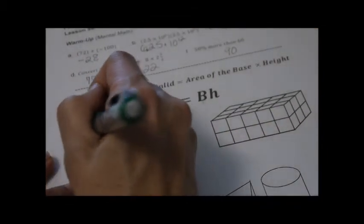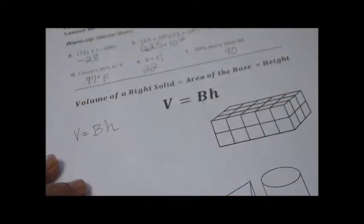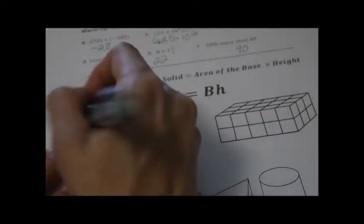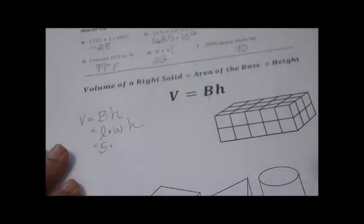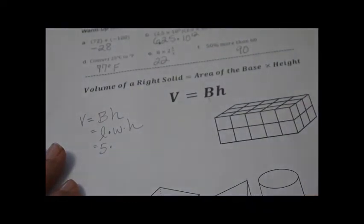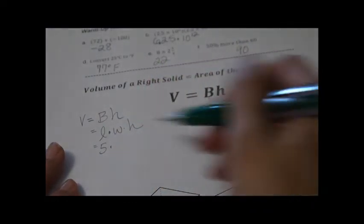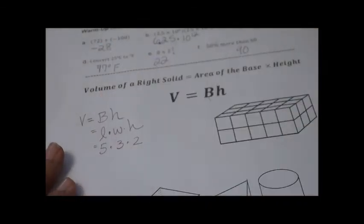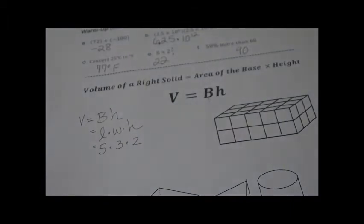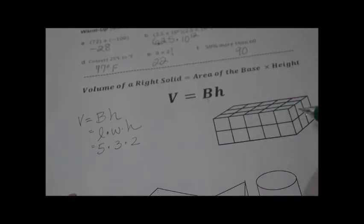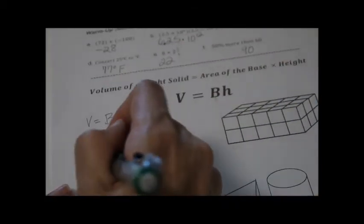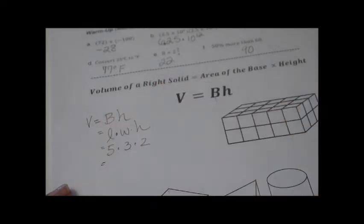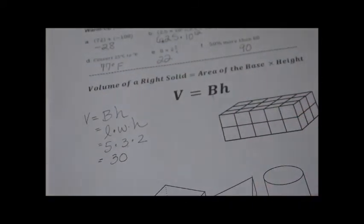So volume equals area of base times height. Because we have a rectangular solid, we go length times width times height — the length was 5, the width 3, and height 2. All these numbers are interchangeable as long as you have a 5 by 3 by 2. Five times 3 times 2 is 15 times 2, so there should be 30 sugar cubes in this thing.